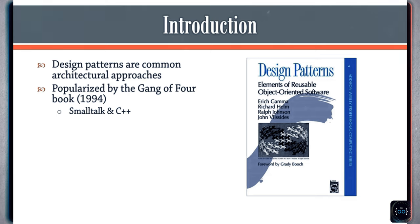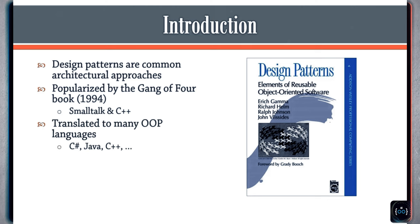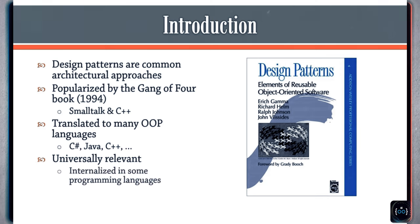The original design patterns book was written using Smalltalk and C++, which were the popular languages of the day. Design patterns have since been translated to many other object-oriented programming languages such as C#, Java, C++, Python, and so on, and even languages which are not properly object-oriented, such as JavaScript. Design patterns are universally relevant — they are as relevant today as they were back in 1994. Modern programming languages internalize some of the design patterns, making them part of the language itself.